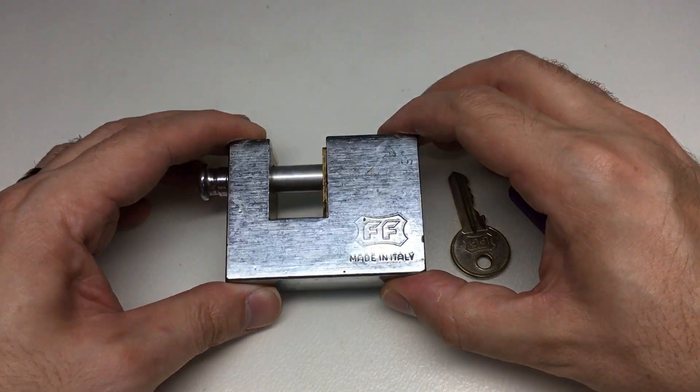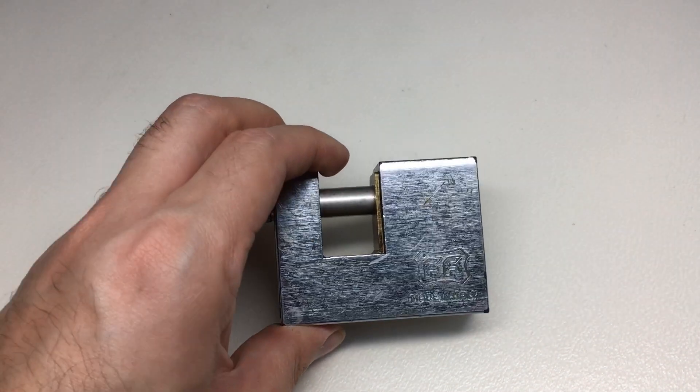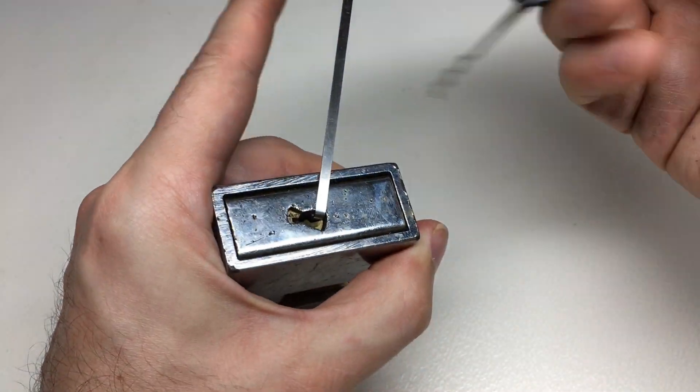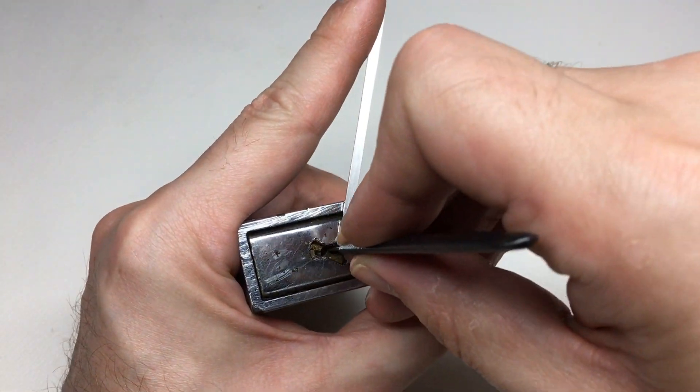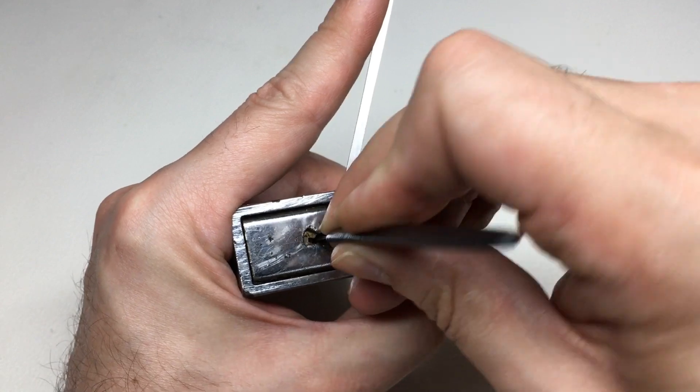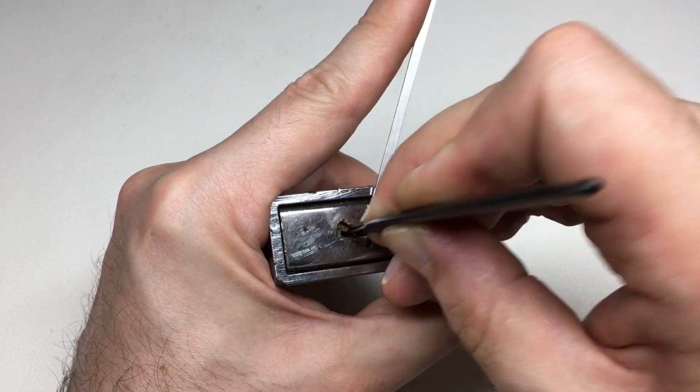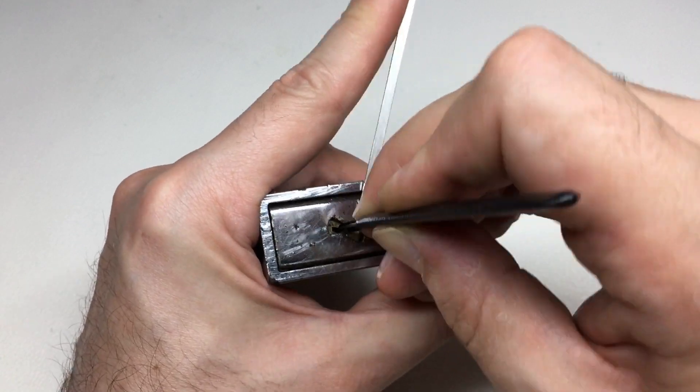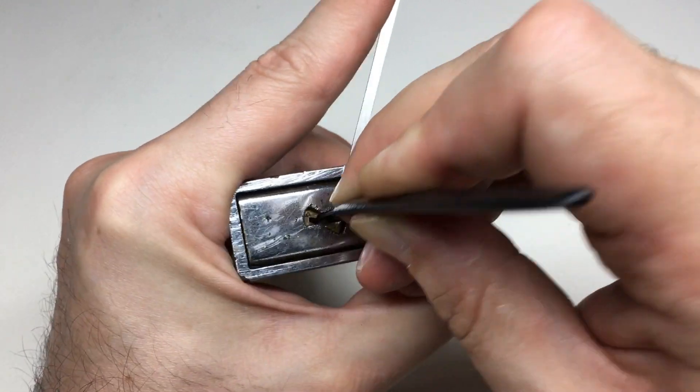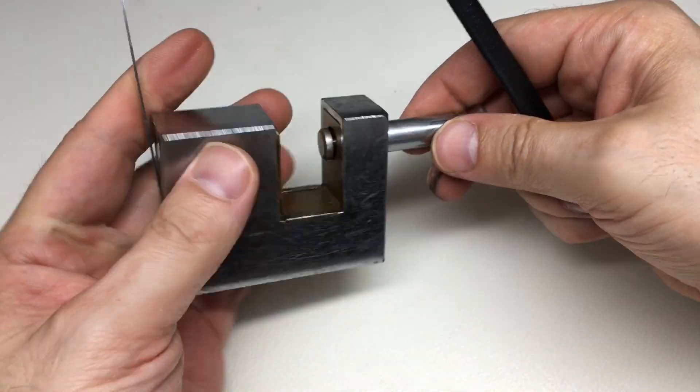And we're back because I just thought to myself, 'I wonder if it rakes?' So I grabbed my trusty Sparrows Worm, which I think is a brilliant little rake, and I just had a little go at raking the lock to see if I can replicate what I did last time. And we're open! There we go. So yeah, it's rakeable too.